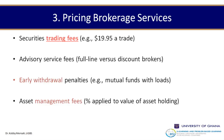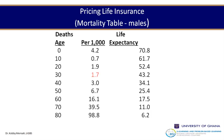Pricing brokerage services involves: securities trading fees, advisory service fees, early withdrawal penalties (if you withdraw from a mutual fund system before maturity), and asset management fees — a percentage applied to the value of assets held. The balance system may encourage customer acquisition and facilitate cross-selling, though it is highly interest-rate sensitive. Moving to pricing life insurance, we use the mortality table, looking at age cohorts and life expectancy rates per thousand customers.